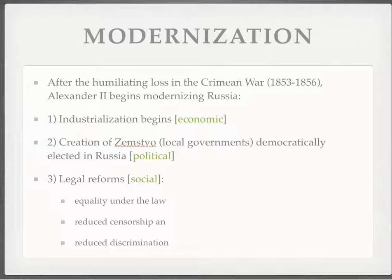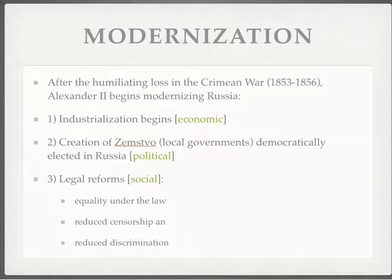The second reform was creating some sort of political freedom — the zemstvos, which were local governments that were democratically elected. However, they had very little power, and the existing bureaucracy at the center with the monarchy in the major cities still really controlled what went on in Russia. These were toothless, for lack of a better word. And then finally, social reforms — at least legal reforms — made it a little easier to live in Russia, particularly with reduced discrimination if you were Jewish or an ethnic group within Russia like in Poland or Ukraine.